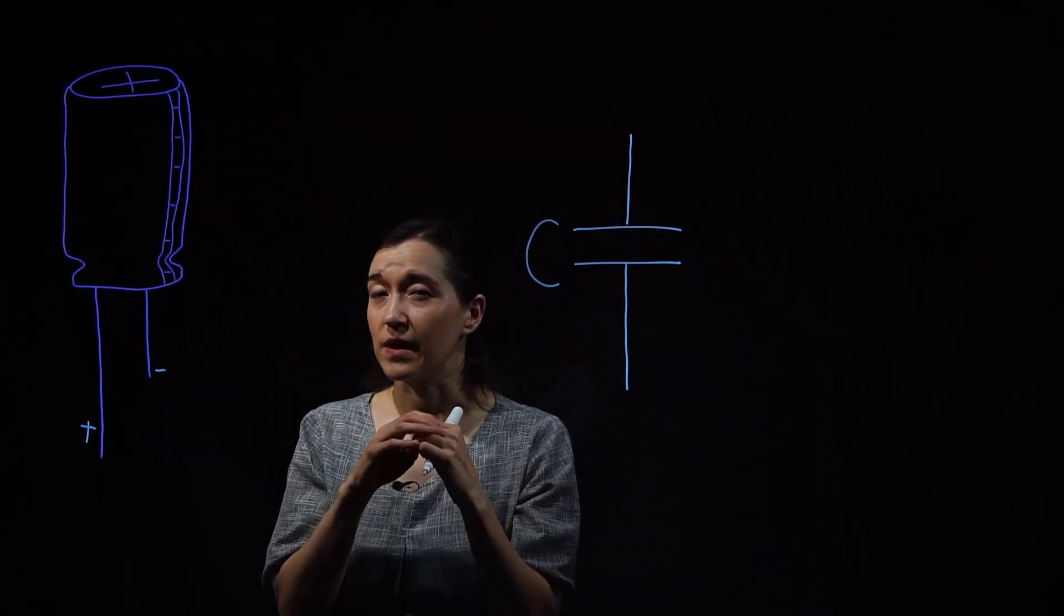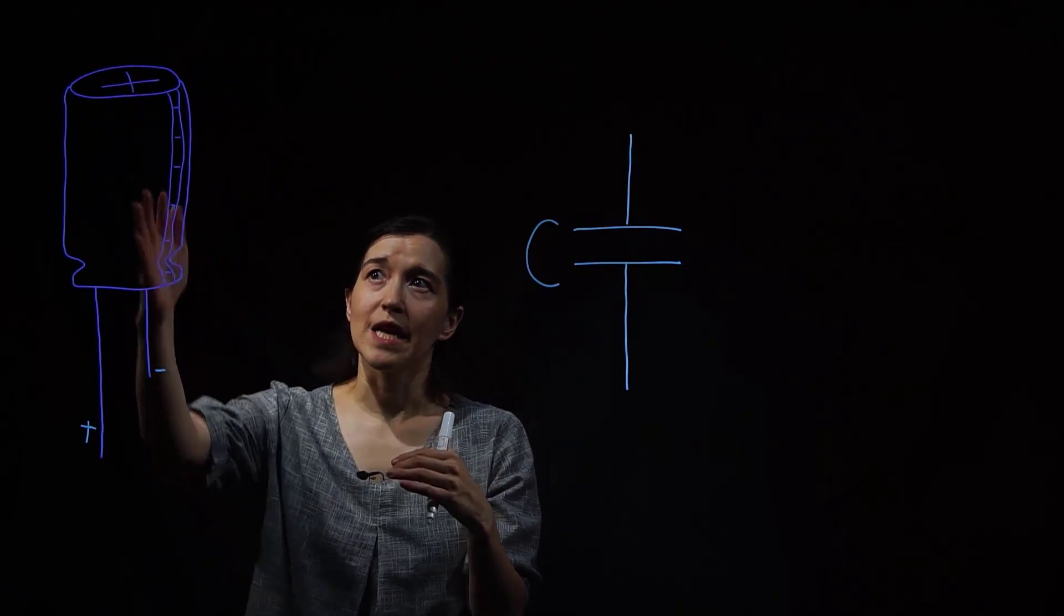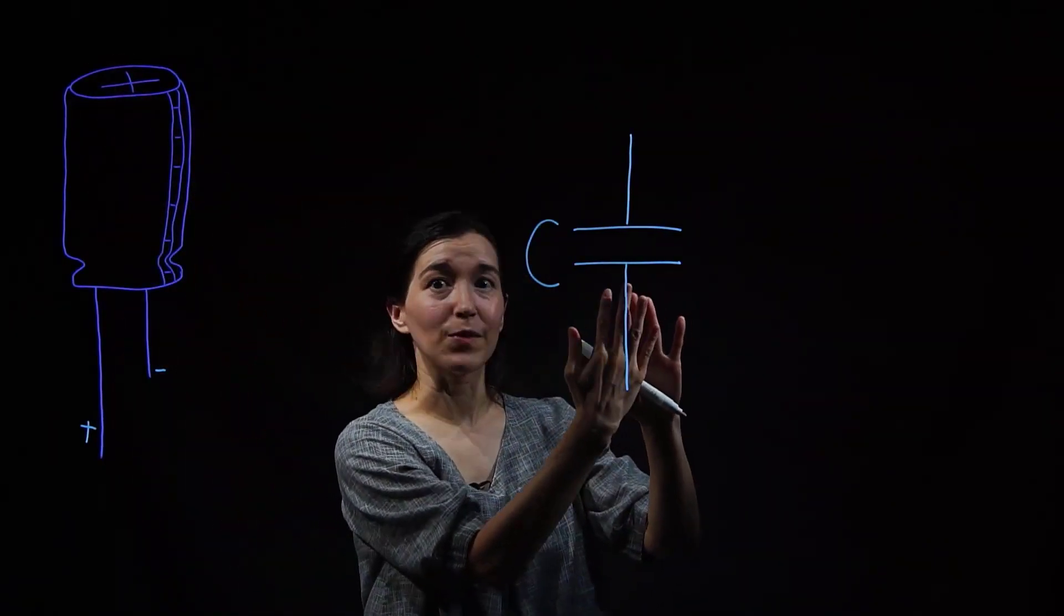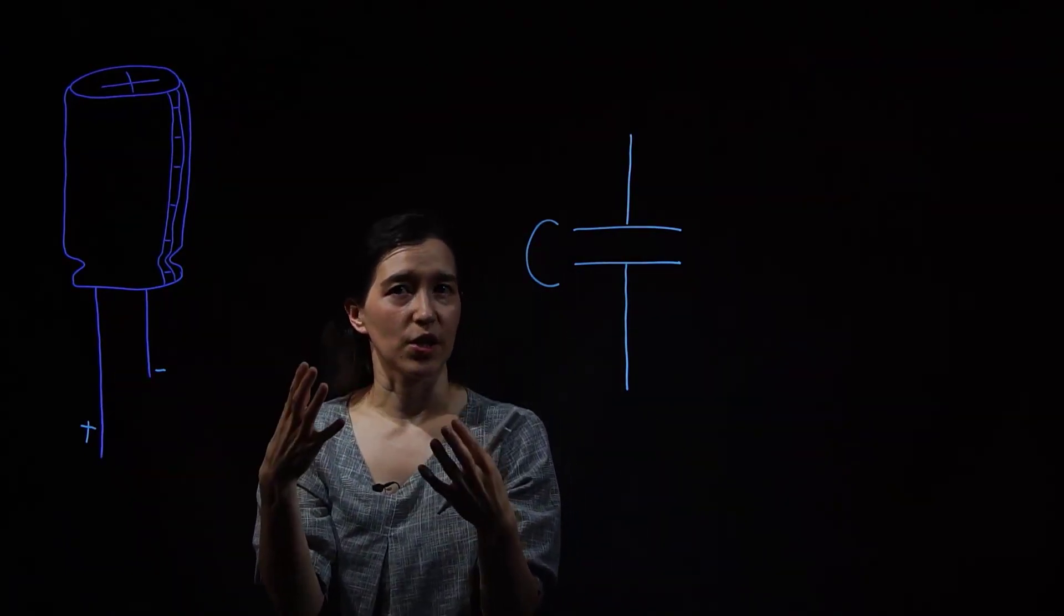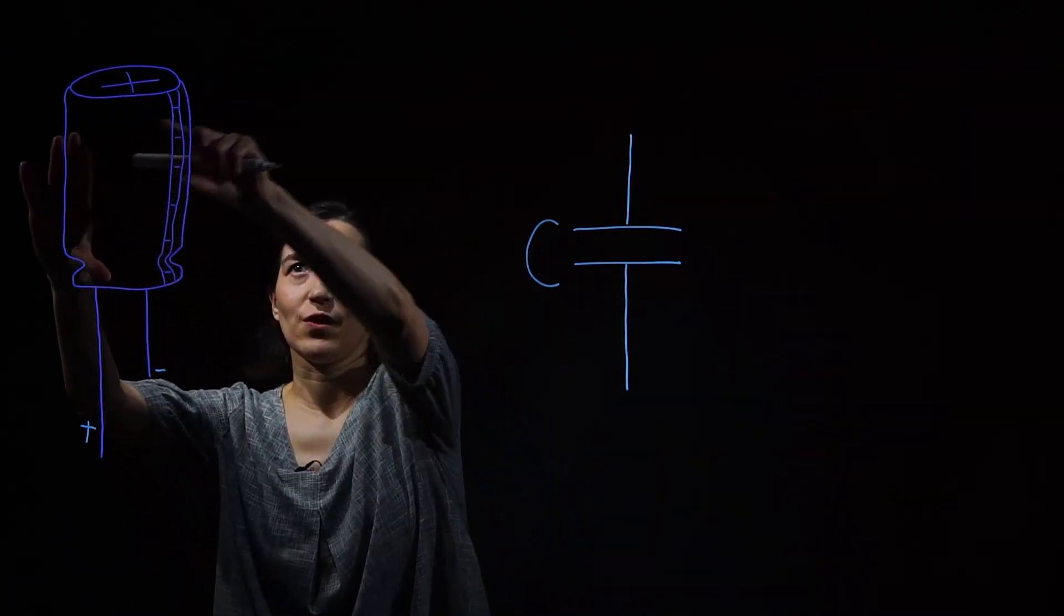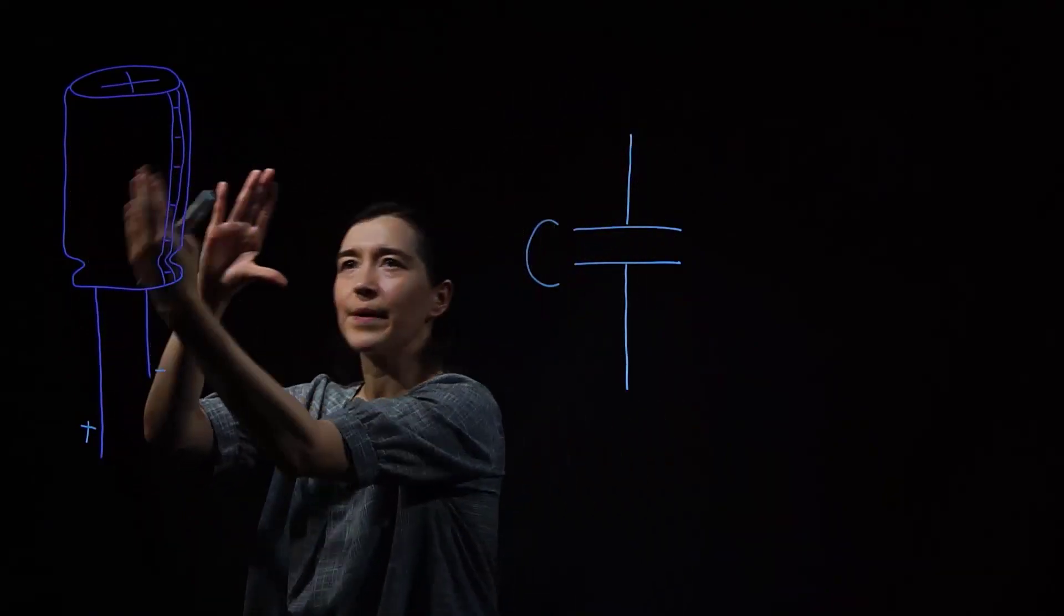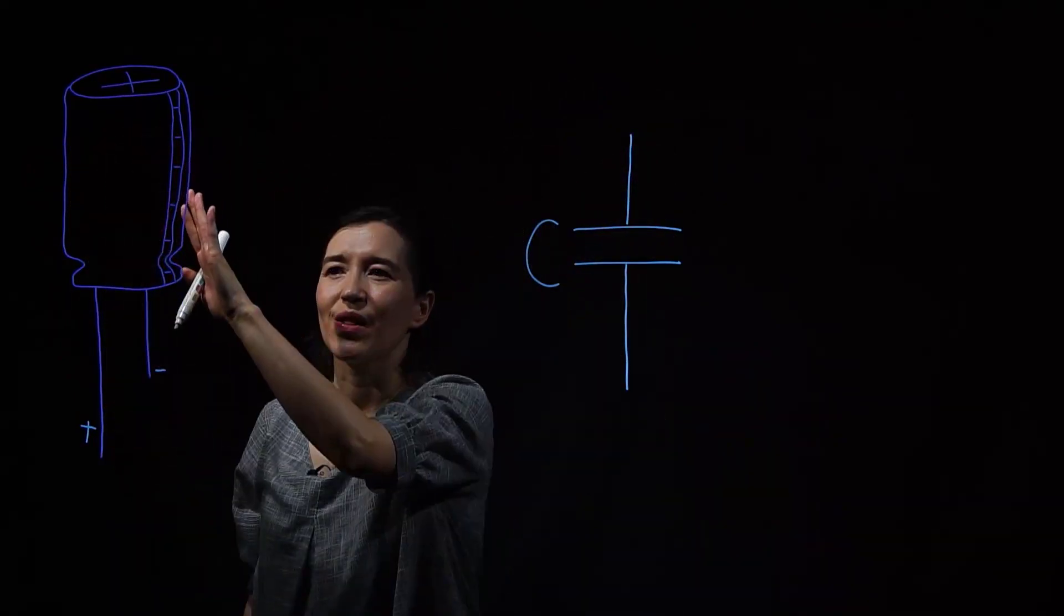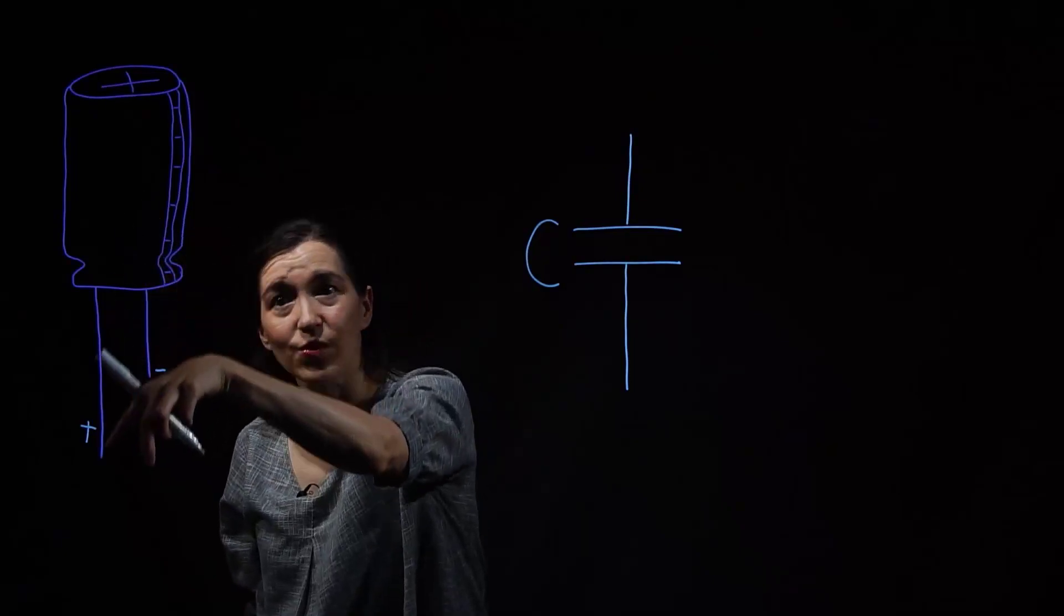So let's look at each part individually. Inside of here is actually two plates of material, and in between is an electrolytic material. And it's actually like very long, and then they wrap it around, and that's what actually forms this canister. That is then connected to these leads.